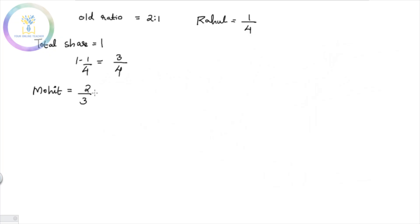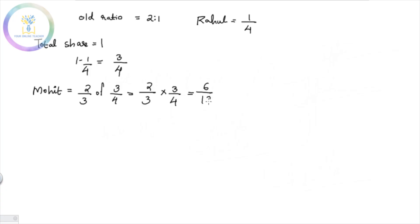Mohith's share: 2/3 of 3/4 equals 2/3 × 3/4 = 6/12. Rohan's share: 1/3 of 3/4 = 3/12. Rahul's share is 1/4 = 3/12.